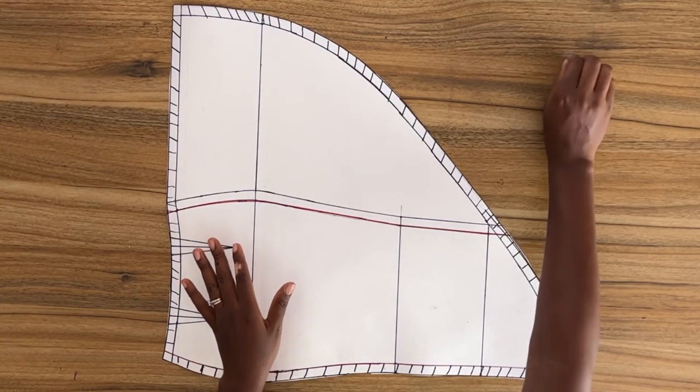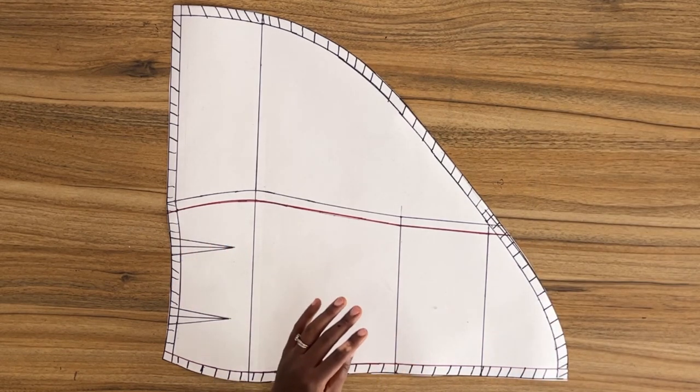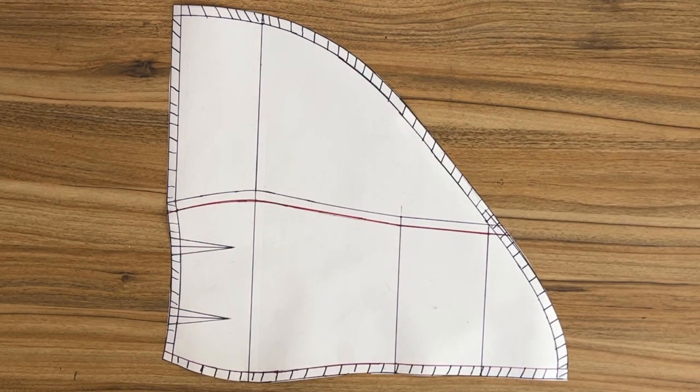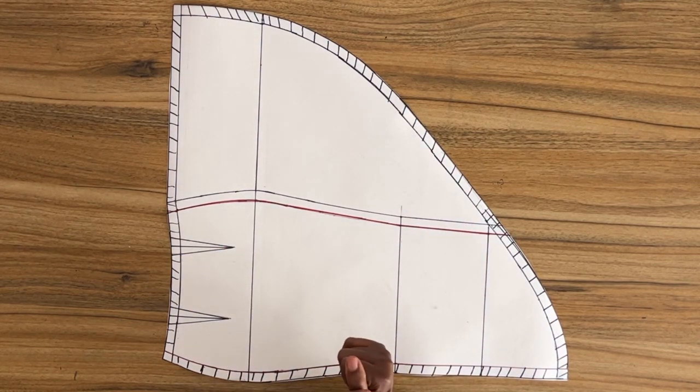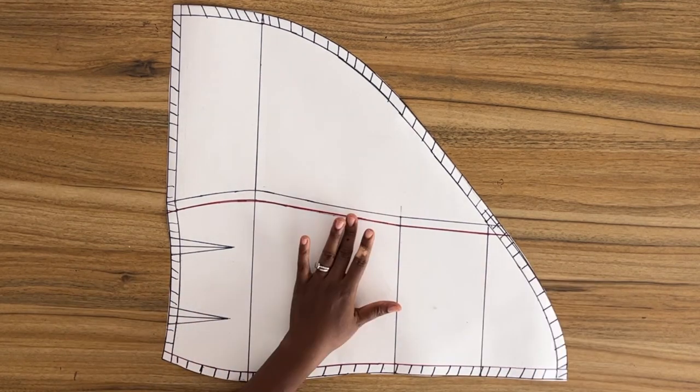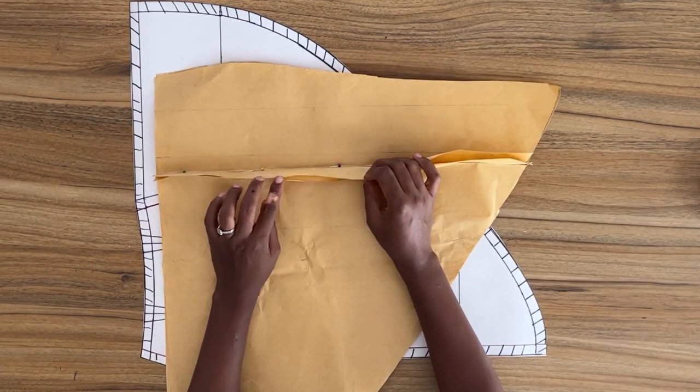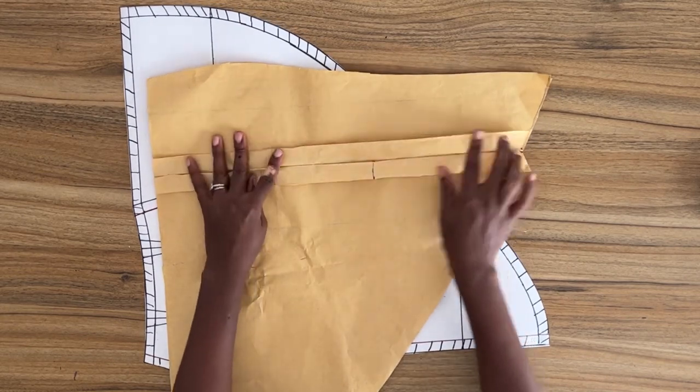So this is what your pattern should look like. For the back piece, you should have two pieces. So the only difference between the front and the back is the zipper allowance. Okay, so I'm going to use another pattern paper just to show you what your back pattern should look like. All right, so this is my back pattern. I've pinned both pieces together.